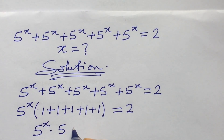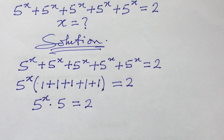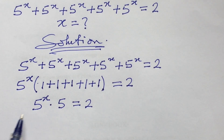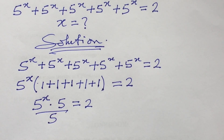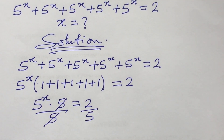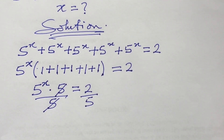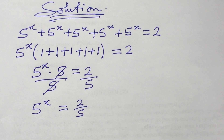We're looking for x, so one of the ways to isolate it is to eliminate this 5. We divide both sides by 5 — according to the law of equations, whatever we do to the left hand side we must do to the right hand side. This leaves us with 5 to the power of x equal to 2 over 5.